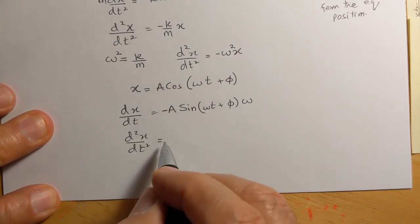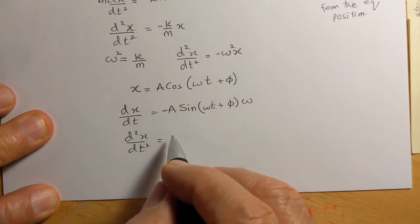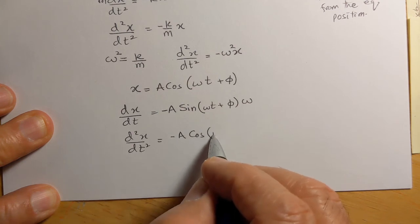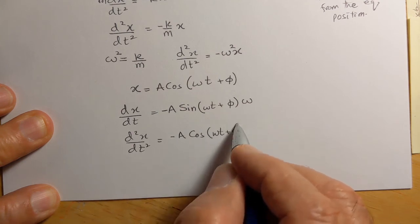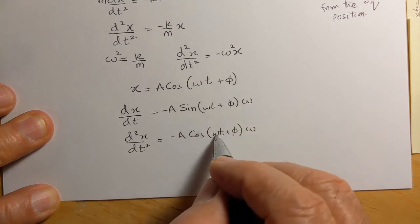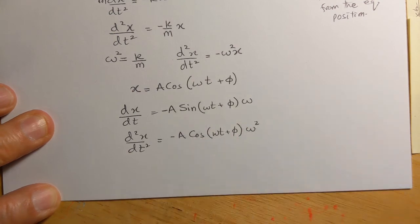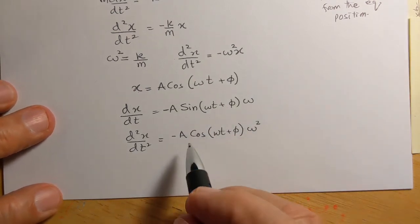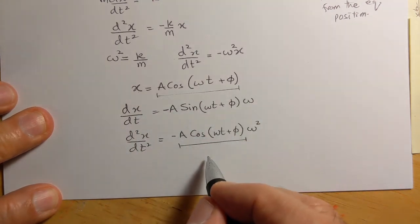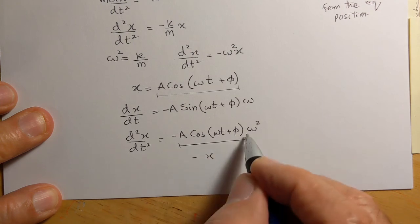x/dt² is going to be -A, and the derivative of sine is going to be cos(ωt + φ), and we have the original ω. When we differentiate this, we get another ω, so we get ω². Now this part is the same as this part, so this is simply x, and we